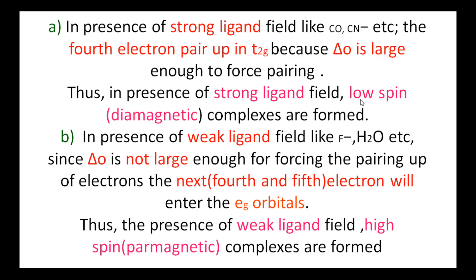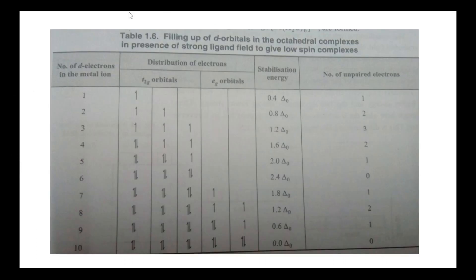Thus, in the presence of a strong ligand field, low spin complexes — that is, diamagnetic complexes — are formed. In the presence of weak ligands like F⁻, H₂O, etc., delta-O is not large enough to force the pairing of electrons, so the fourth and fifth electrons will enter the eg orbitals. Thus, in the presence of a weak ligand field, high spin paramagnetic complexes are formed. Now let us see the filling up of d-orbitals in octahedral complexes in the presence of strong ligand field, where crystal field splitting delta is more.